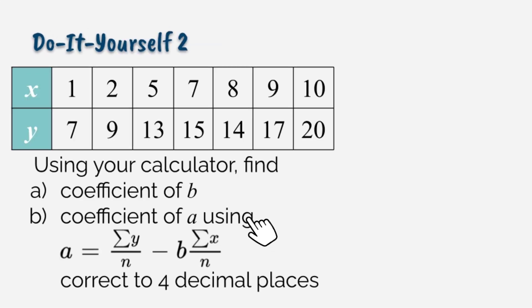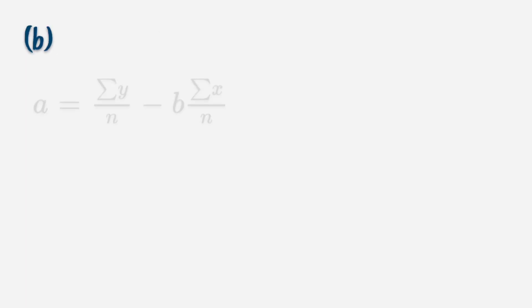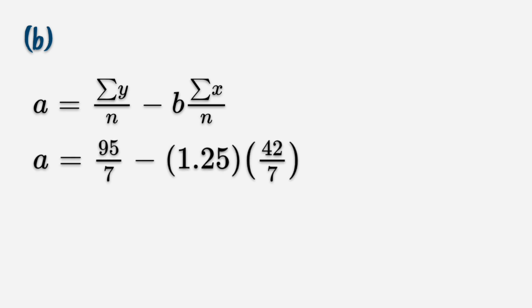Question B: find coefficient of A using formula correct to four decimal places. We're going to use the rounded value of B to substitute into the formula. And A is 6.0714 correct to four decimal places.